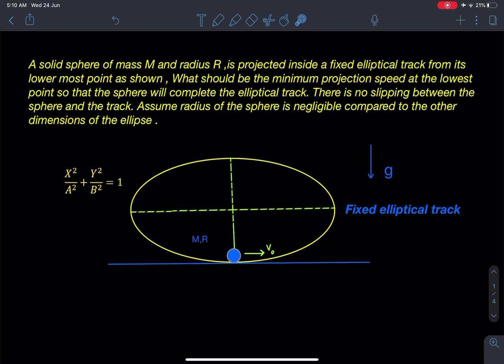Here there is a small modification in this problem, and that is there is no slipping between the sphere and the track, which means that this sphere is in pure rolling while moving around in this elliptical track. Okay, so let's discuss this problem.